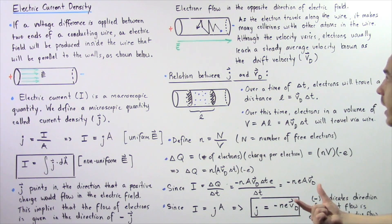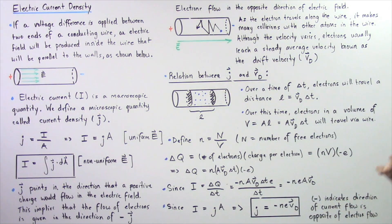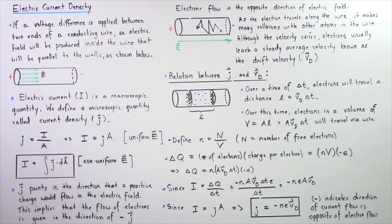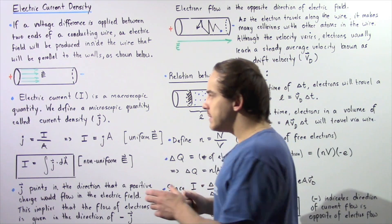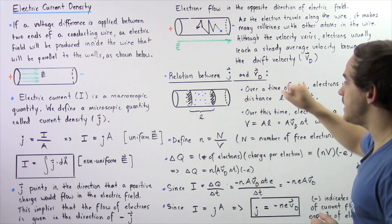So the pathway of a single electron will have a zigzag form as shown in the following diagram. Now although the velocity of our electron varies as it travels through our wire because of these collisions, electrons usually reach a steady average velocity that is known as the electron drift velocity, given by v_d. Let's now try to build a relationship between the current density j and our drift velocity v_d.